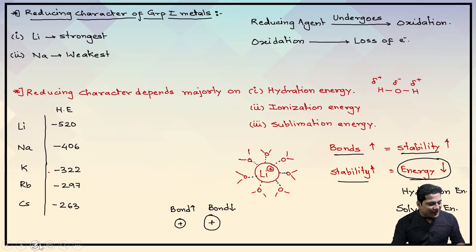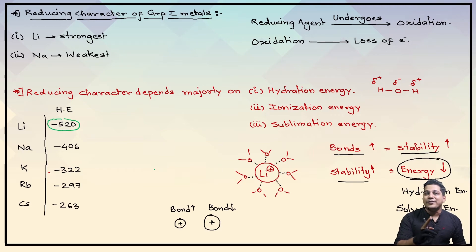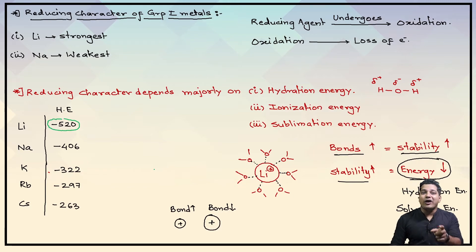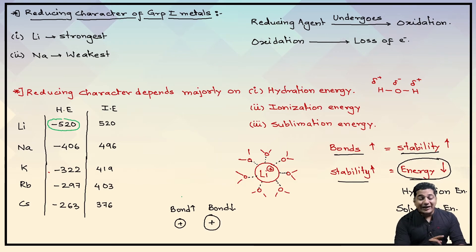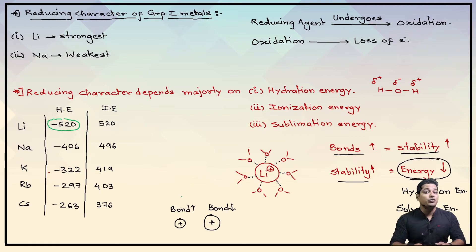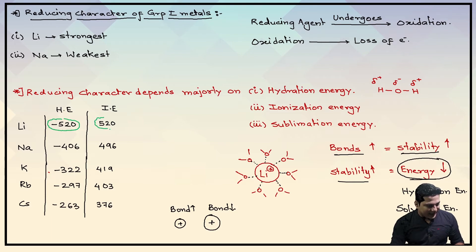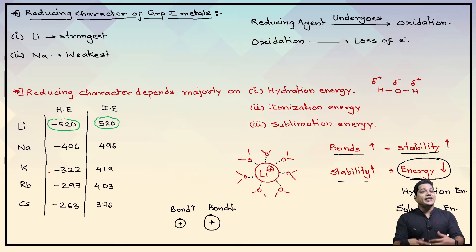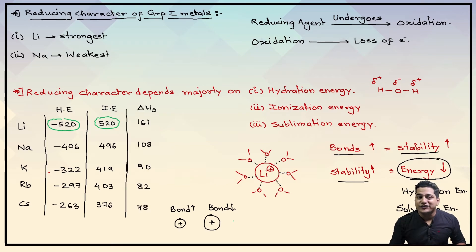So we have proved that lithium positive has ion-dipole interactions with water, and because of this lithium loses a very high amount of energy. Lithium has the highest hydration energy of minus 520. The reduction character depends on: first, hydration energy; second, ionization energy — lithium has the highest ionization energy of plus 520; and third, the energy of sublimation — lithium also has the highest sublimation energy. But reducing character depends on all three of them.